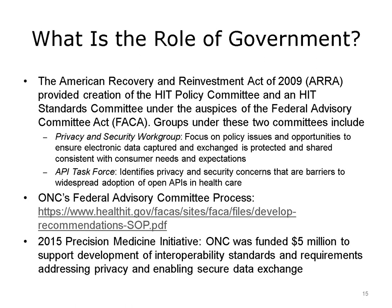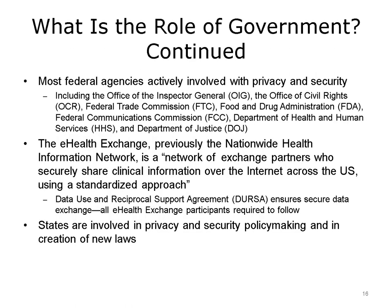Publications from these groups are found on www.healthit.gov. The National Committee on Vital and Health Statistics, or NCVHS, has weighed in on a number of privacy and security issues. The 2015 Precision Medicine Initiative specifically provided ONC $5 million to support development of interoperability standards and requirements addressing privacy and enabling secure data exchange. Most federal agencies are involved in privacy and security, including the Office of the Inspector General (OIG), Office of Civil Rights (OCR), Federal Trade Commission (FTC), Food and Drug Administration (FDA), Federal Communications Commission (FCC), Department of Health and Human Services (HHS), and Department of Justice (DOJ).